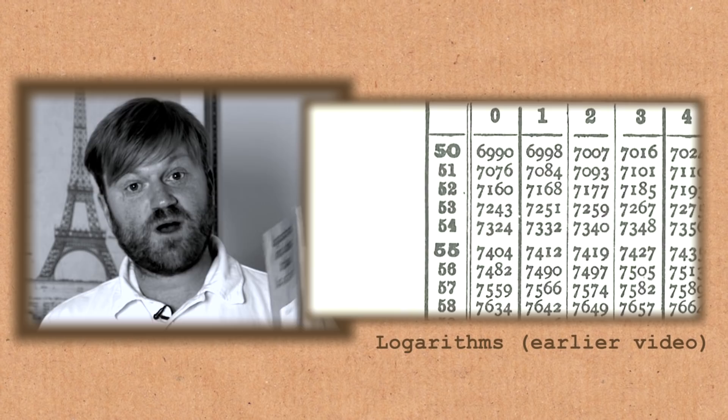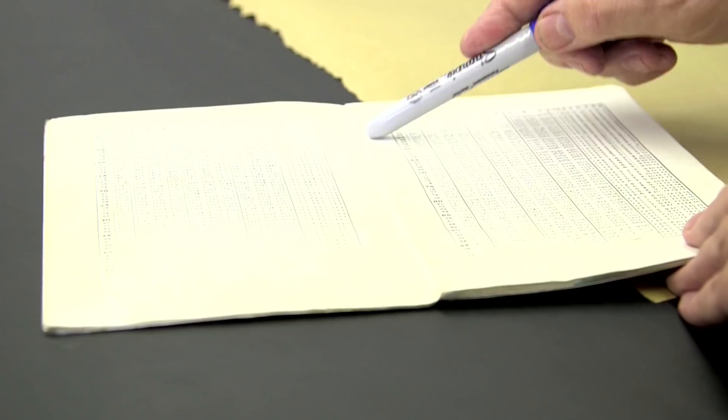Now you're going to ask the question, where do these numbers come from? How did I make up tables of antilogarithms and logarithms? And this was done by a man called John Napier in the period between 1594 and 1614.